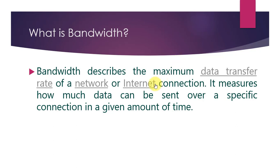Bandwidth is used to describe network speed. It does not measure how fast bytes of data move from one location to another. Since data packets travel over electronic or fiber optic cables, the speed of each bit transferred is negligible. Instead, bandwidth measures how much data can flow through a specific connection at a time.